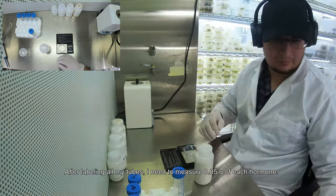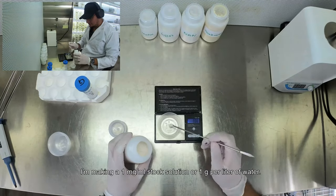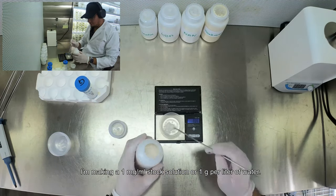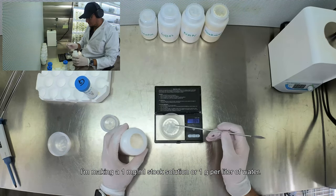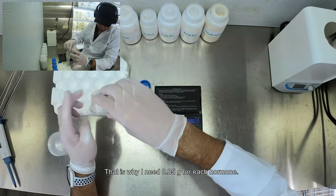After labeling all my tubes, I need to measure 0.05 grams of each hormone to make a 1 mg per ml solution, or 1 gram per liter of water. That's why I need 0.05 grams for each hormone.